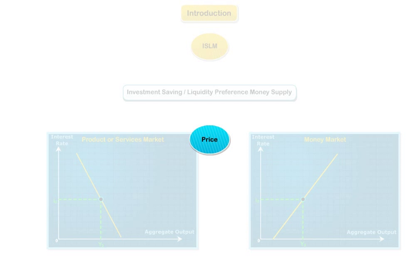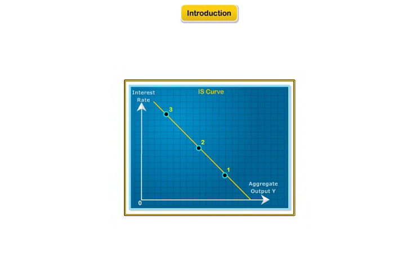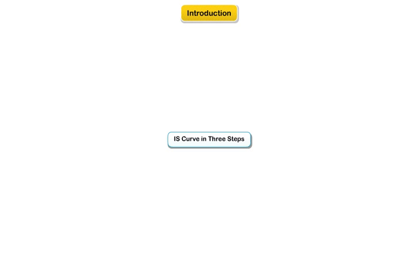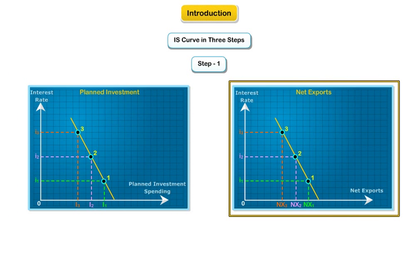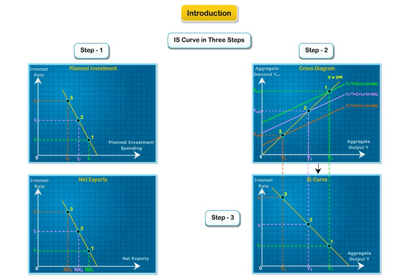Note that the price assumption still holds here, so the real and nominal output is still directly proportional to the quantities produced or sold. The ISLM model consists of two sub-models: IS and LM. IS captures the equilibrium aggregate output versus interest rate movements. This is done in three steps: first, examine the effect of interest rates on the components of aggregate demand — consumption, planned investment spending, and net exports; next, use the Keynesian cross diagram to see how the interest rate affects the equilibrium level of aggregate output. The resulting relationship between equilibrium aggregate output and the interest rate is known as the IS curve.